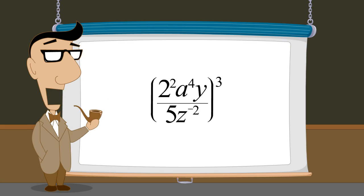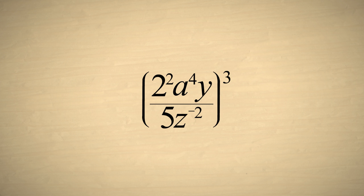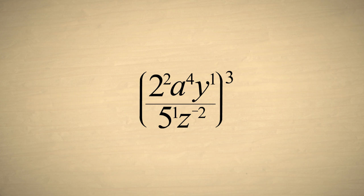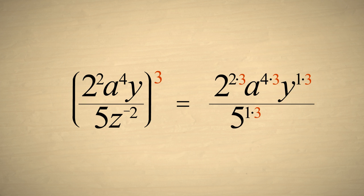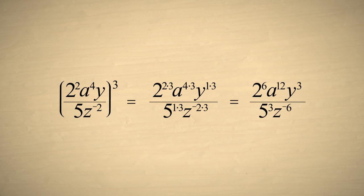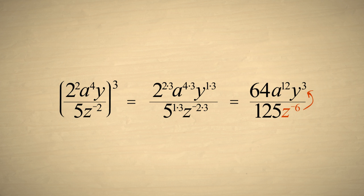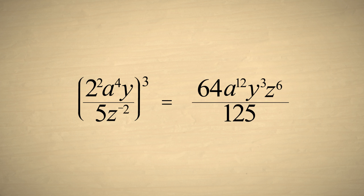Now let's simplify a fractional expression with positive and negative exponents raised to a power. Again, we temporarily add exponents of one to the terms without exponents. Since this expression is raised to the third power, we start by multiplying each exponent in the expression by three. Next, we can write two to the sixth power as sixty-four, and five cubed as one hundred twenty-five. As a last step, we can move the term with a negative exponent from the denominator to the numerator and change the sign of the exponent to positive. We have now written this expression in its simplest form.